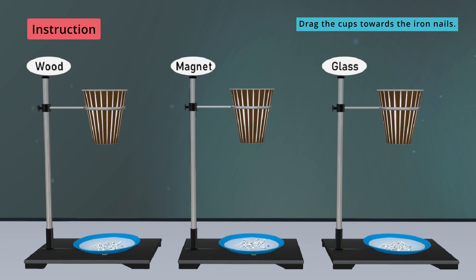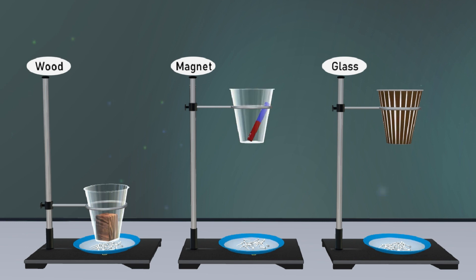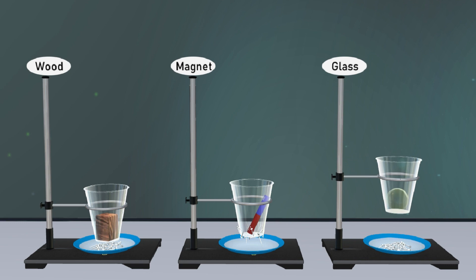Drag the cups towards the iron nails. Drag the cups towards and away from U-Clip to the iron nails.